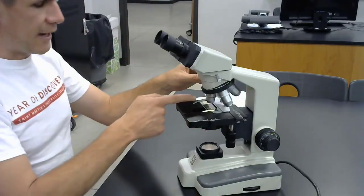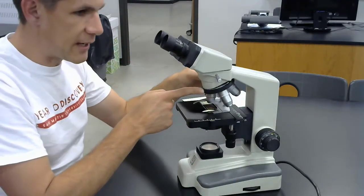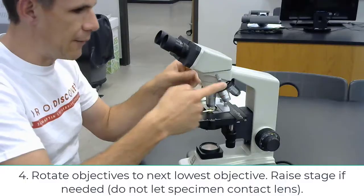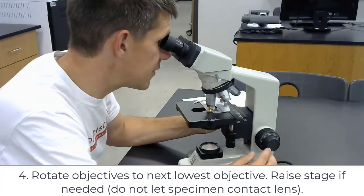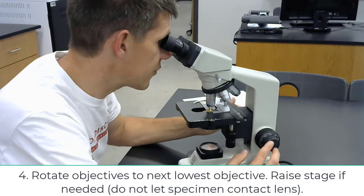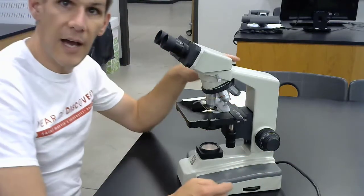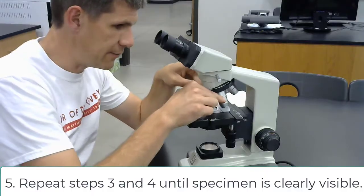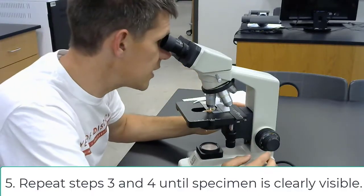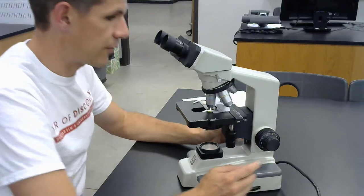So now that I have this in focus, I can rotate the objective to the mid-power and then, only using the fine objective, gently and slowly move it until it is in focus again. Then I can use any higher objective and very gently move it until it is in focus again.